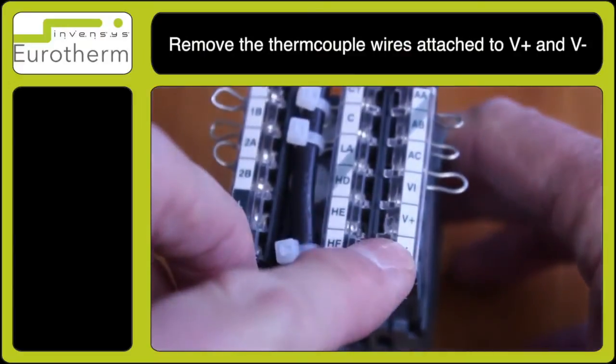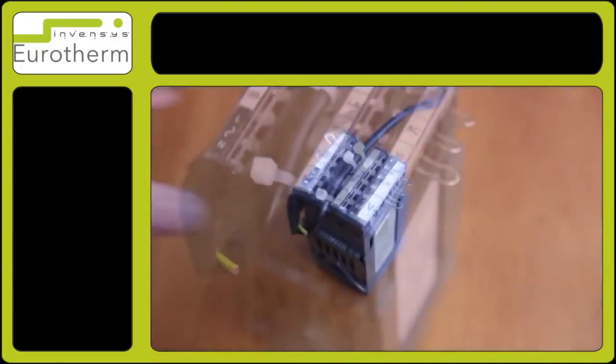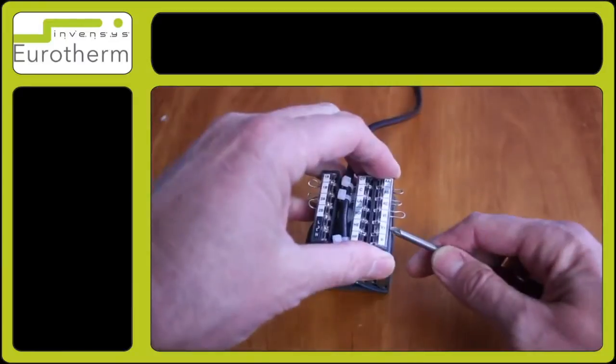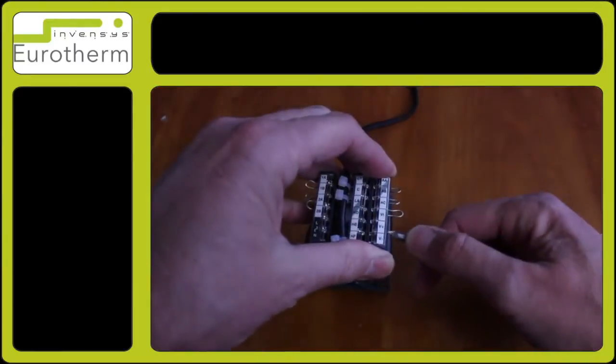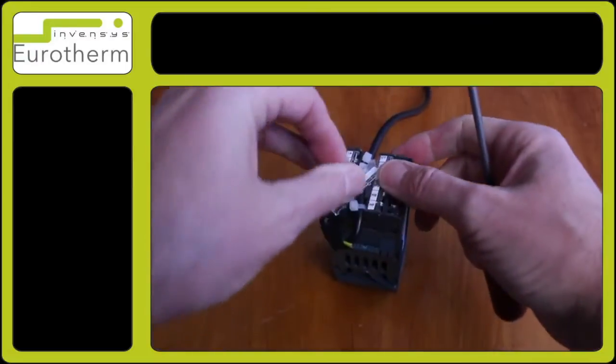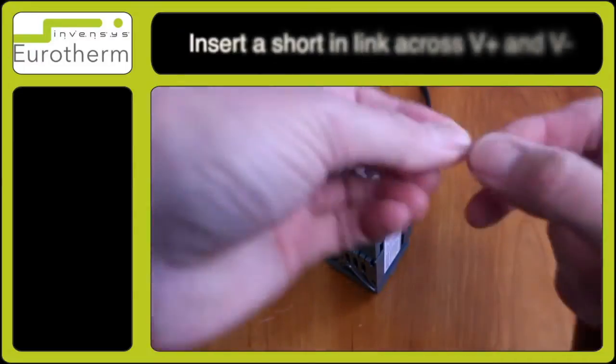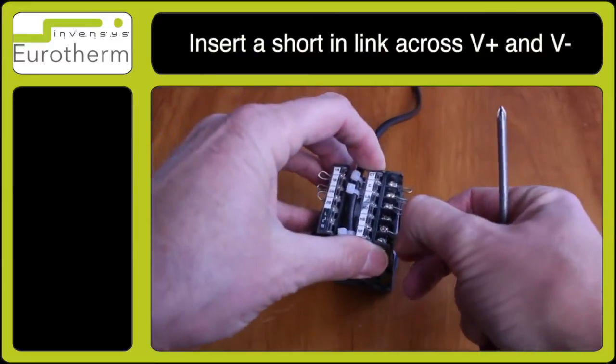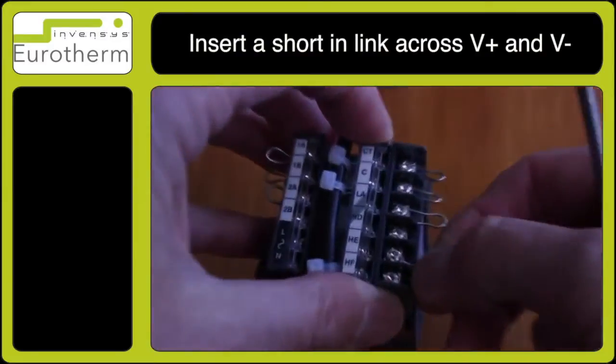Remove the thermocouple wires that are attached on this unit. Open the protective plate and insert a shorting link.